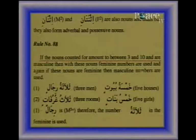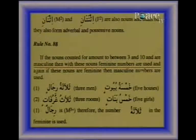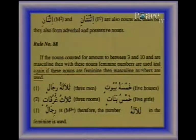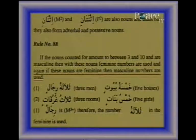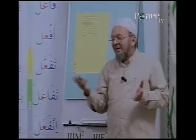Rule number 88: if the nouns counted for amount to between 3 and 10 and are masculine, then with these nouns feminine numbers are used. And again, if these nouns are feminine, then masculine numbers are used. So please mark: from 3 to 10 we have this rule. From 1 to 2, what we follow? Same as the adjectives rule.